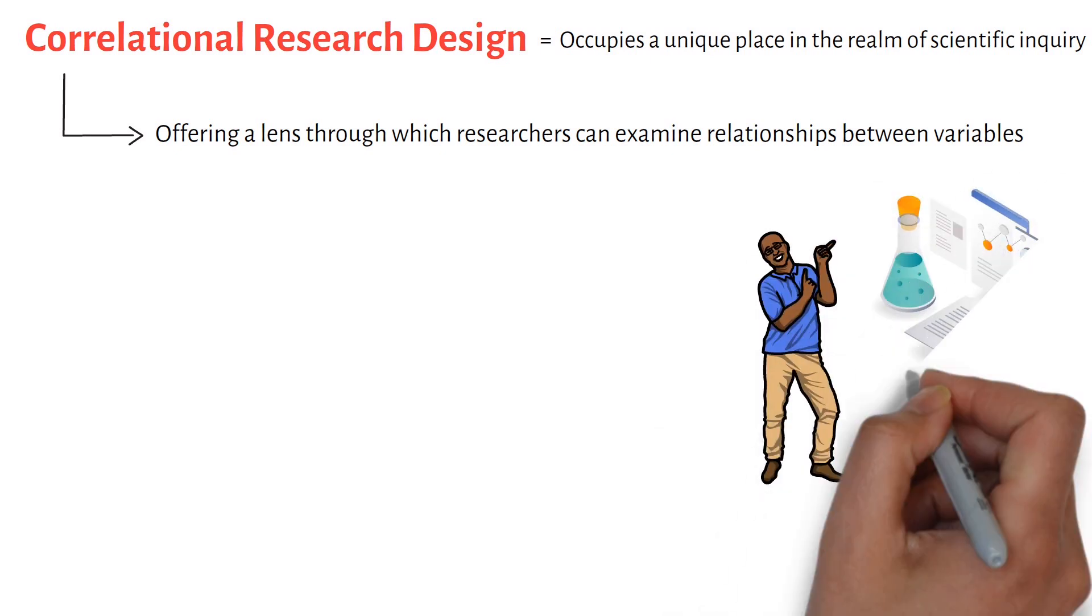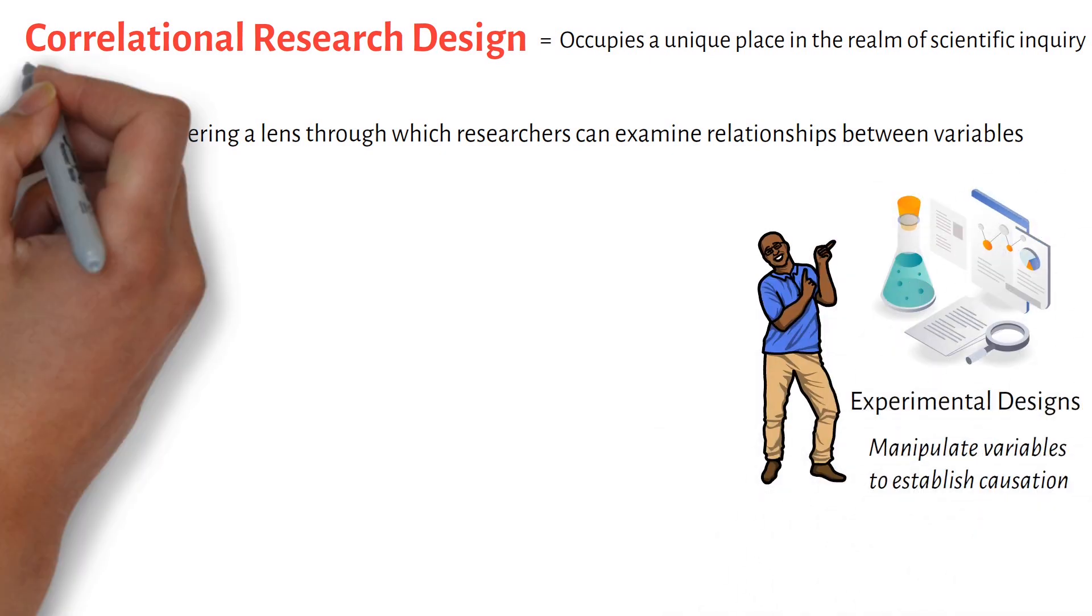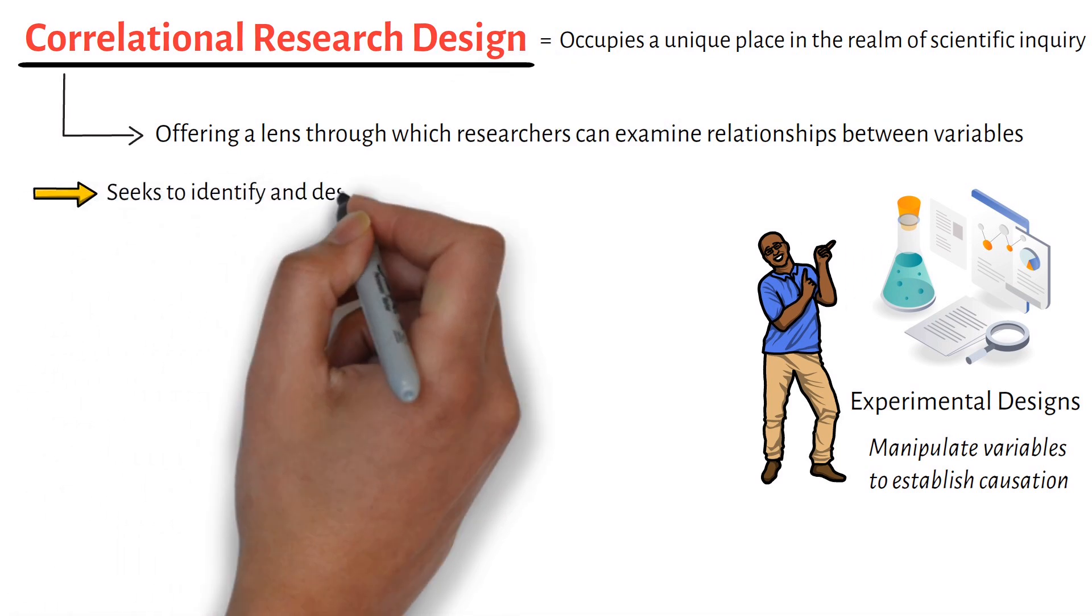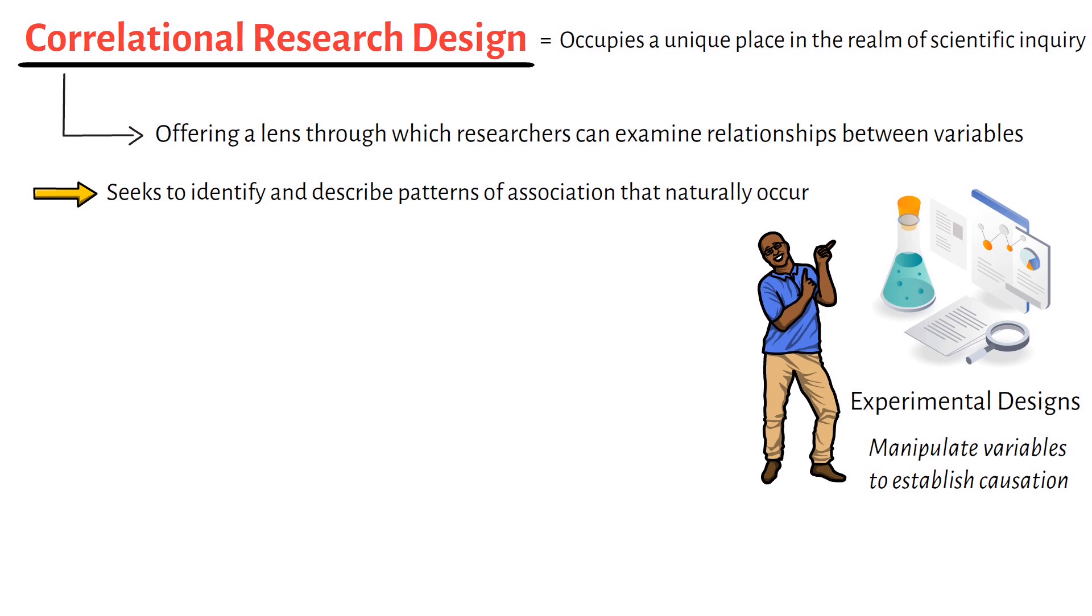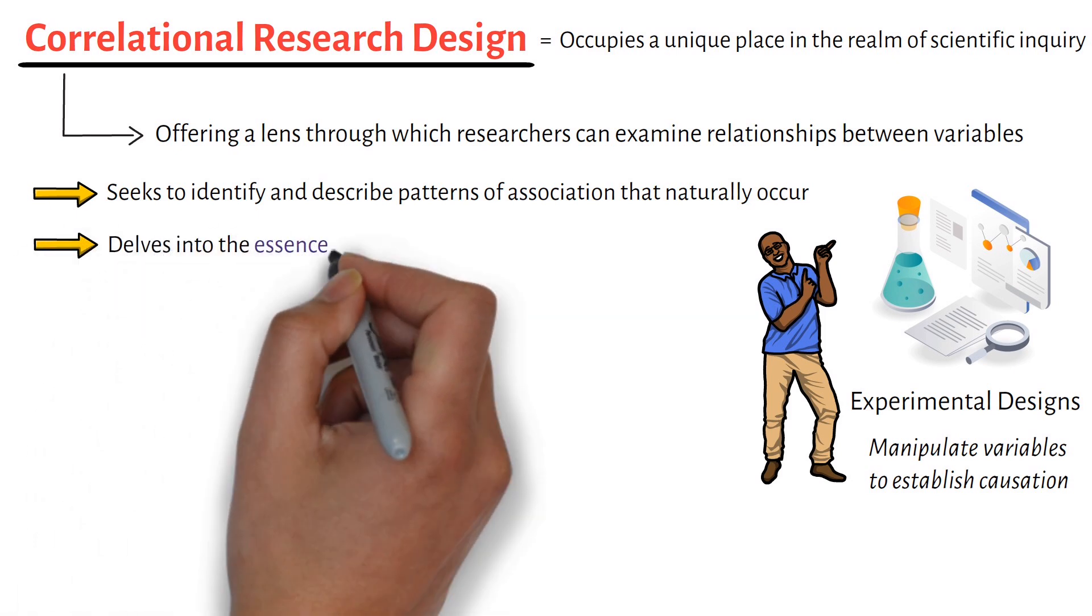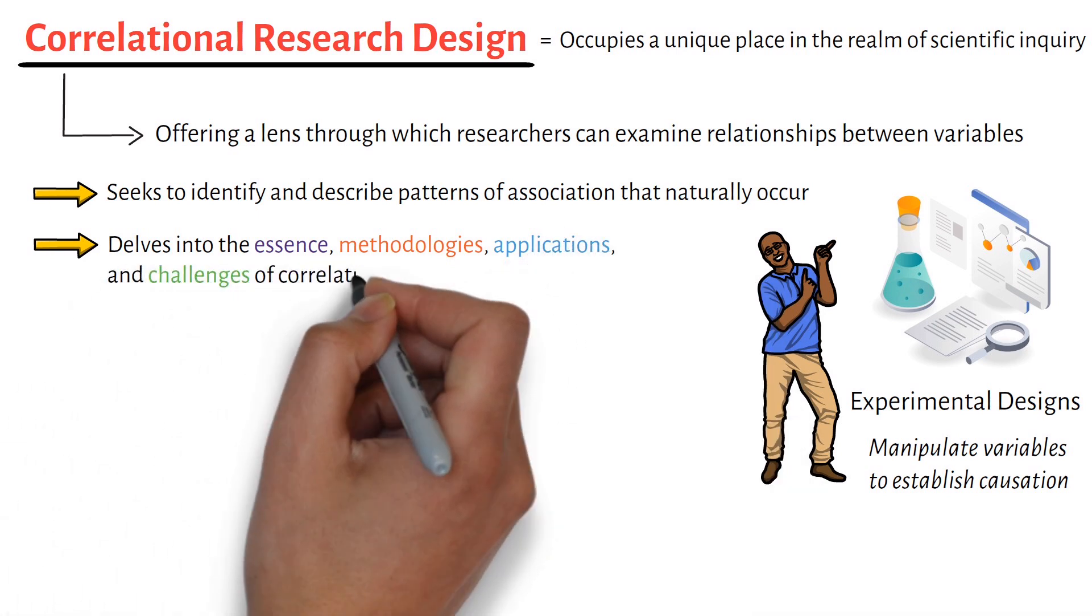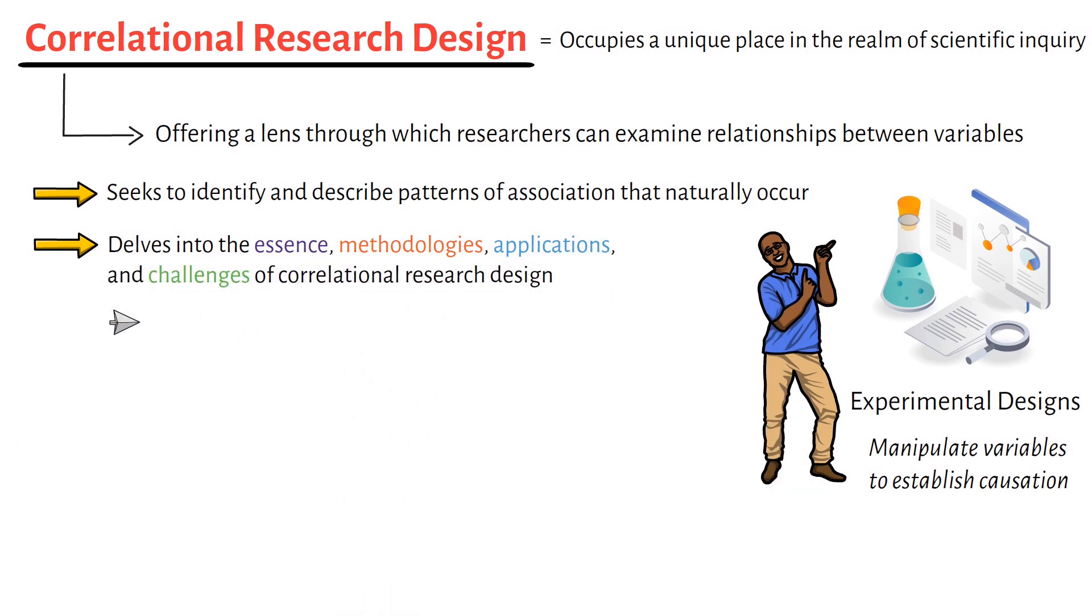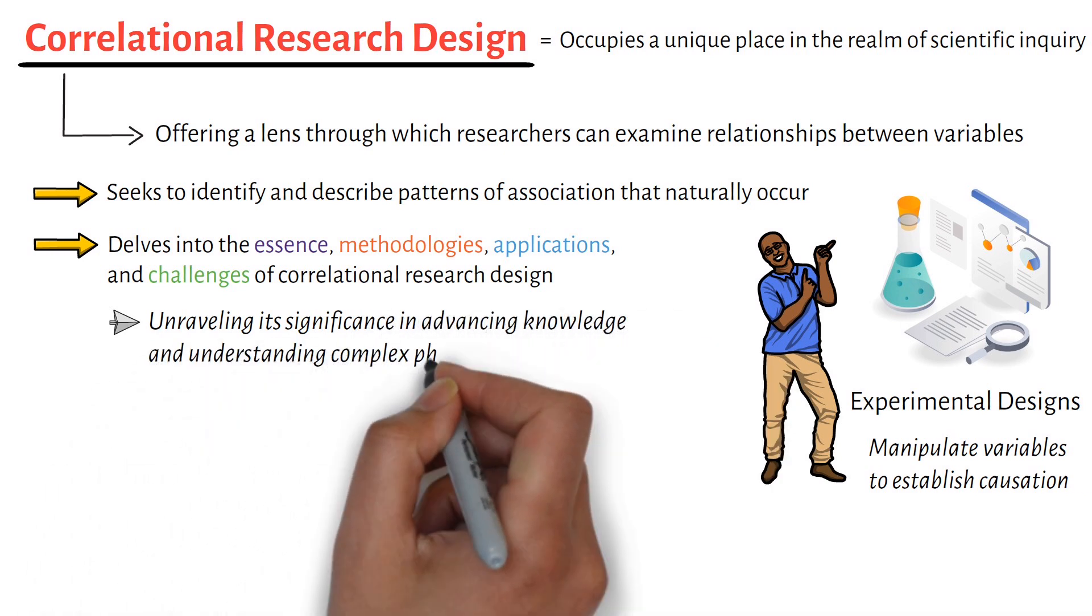Unlike experimental designs that manipulate variables to establish causation, correlational research seeks to identify and describe patterns of association that naturally occur. This video lecture delves into the essence, methodologies, applications, and challenges of correlational research design, unraveling its significance in advancing knowledge and understanding complex phenomena.